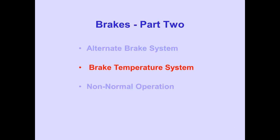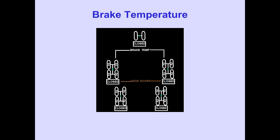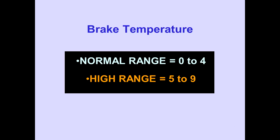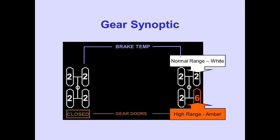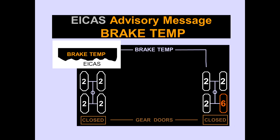Now let's look at the brake temperature system. Relative values of individual main wheel brake temperatures are displayed on the gear synoptic. The brake temperature system has two temperature ranges: a normal range from 0 to 4, and a high range from 5 to 9. The normal range is displayed in white and the high range is displayed in amber. The ICAS advisory message, brake temperature, is displayed when any brake temperature reaches the high range of 5 units or more.